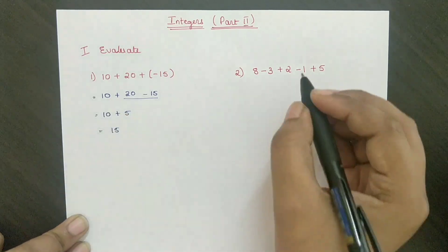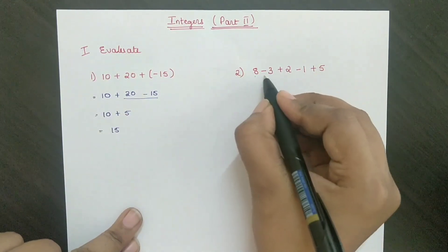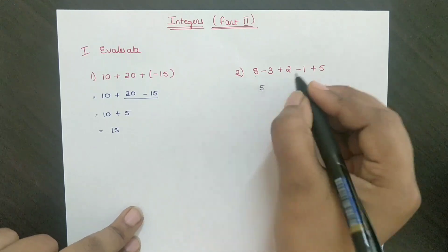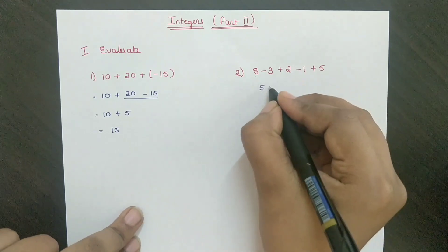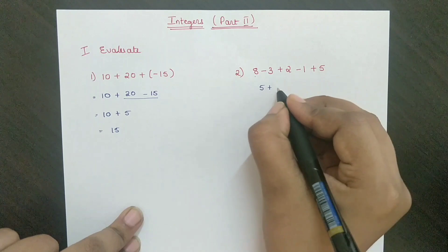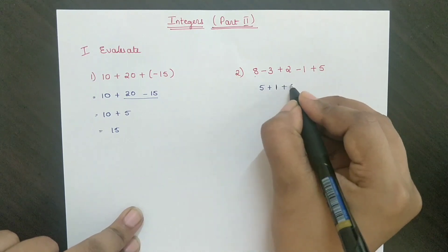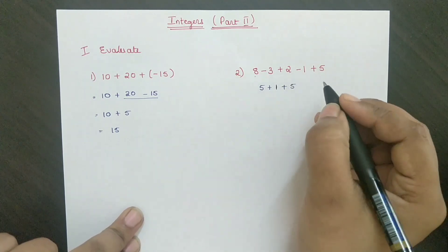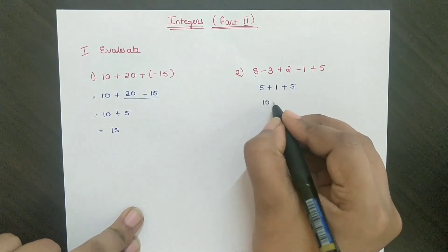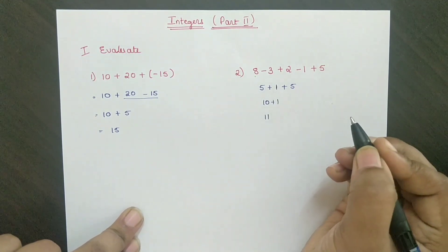Second problem: 8 minus 3 equals 5, plus 2 minus 1 equals 1, plus 5 equals 5, plus 5 equals 10, plus 1 equals 11.